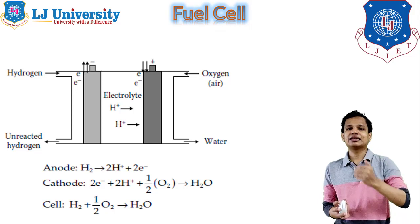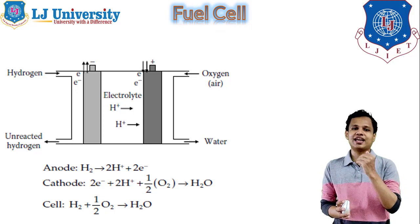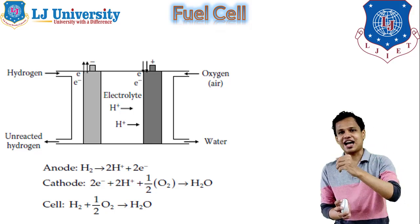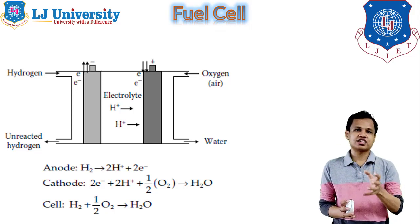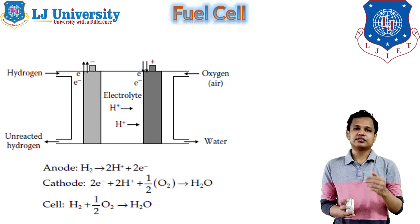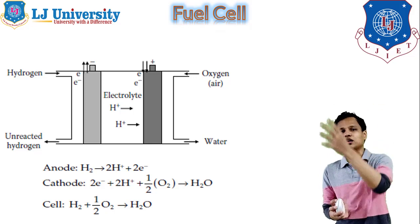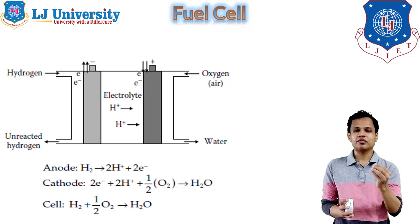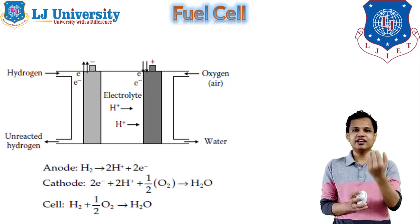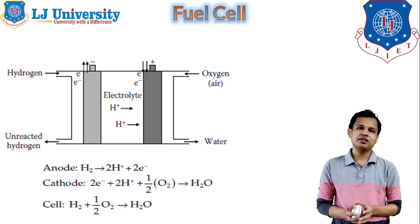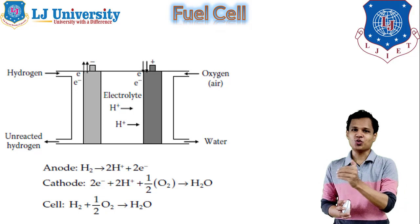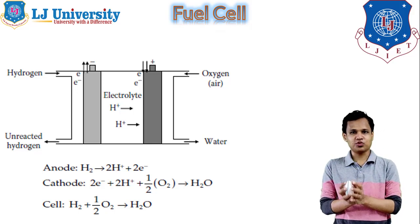You can see below that three equations are given. First, for the anode — the negative electrode — H2 is disintegrated into hydrogen ions and electrons. Hydrogen ions are transferred via the electrolyte and electrons are transferred via the current line. Second, for the cathode — two electrons come from the current line and two hydrogen ions come from the electrolyte, and the oxygen we are supplying combines to give us water. The overall equation is: H2 + ½O2 → H2O.